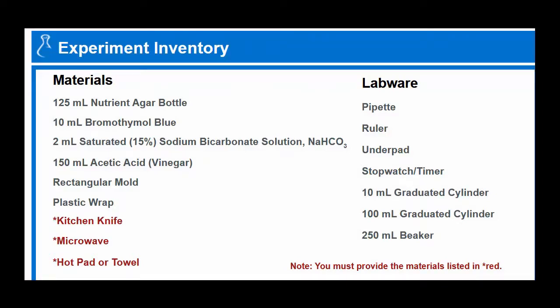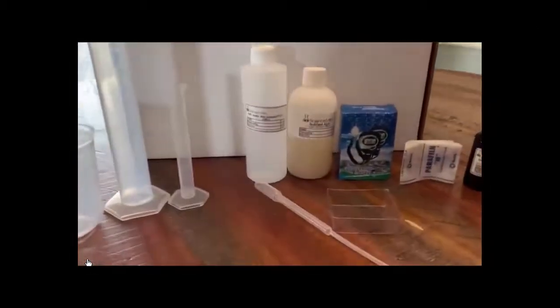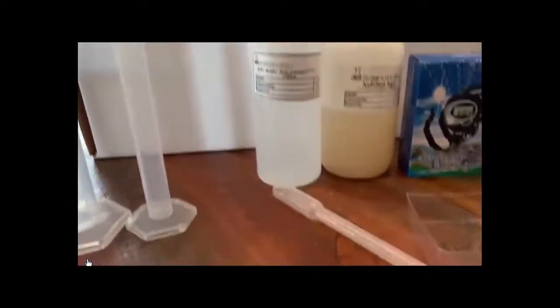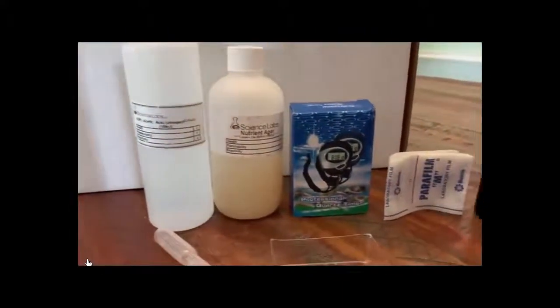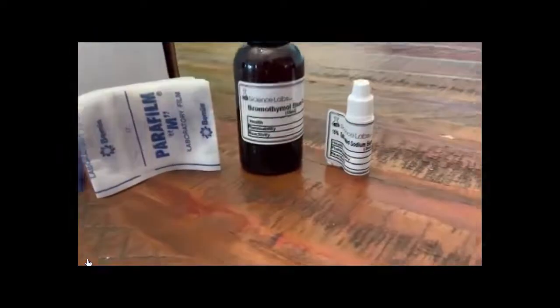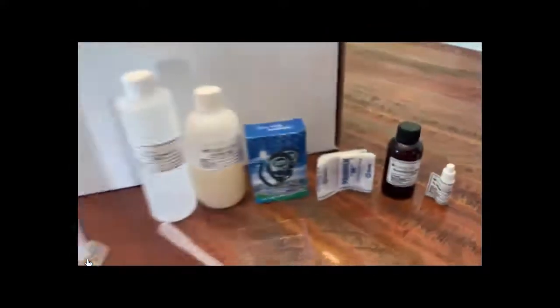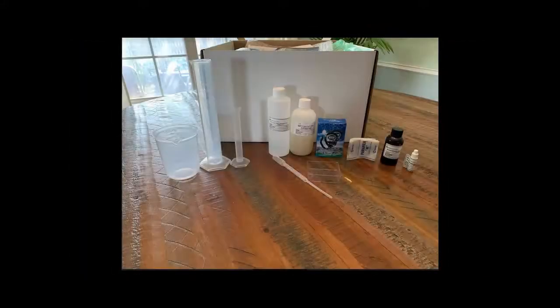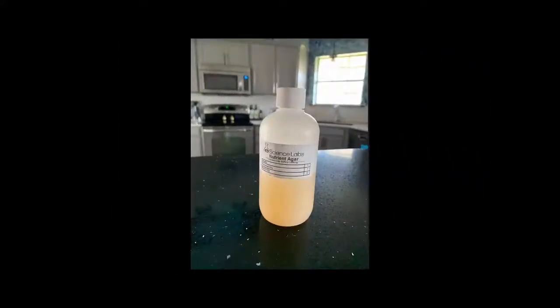Here is your lineup — an overview of all the things you're going to need from your lab kit. On the left are some beakers, there is the bromothymol blue solution and everything. On the left are the beakers, in the middle is the agar along with the vinegar and stopwatch, and on the ends is the bromothymol blue and the 15% solution.